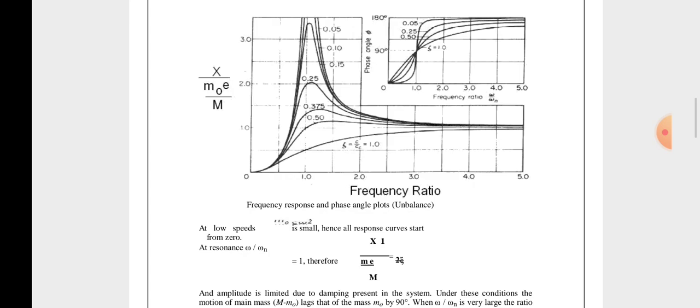So at low speed it is very slow since the response score is part of 0. At the response ω/ωn equals 1, therefore X1/(m0 e/M), and the amplitude is limited due to the damping present in the system under the condition that the motion of the main mass remains.